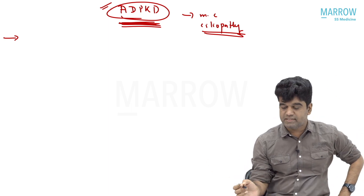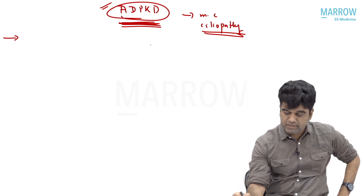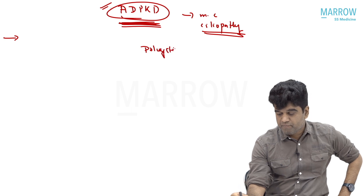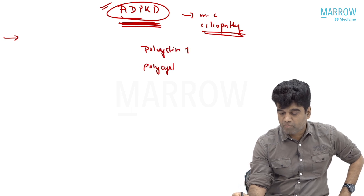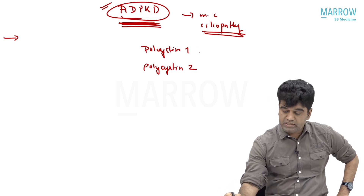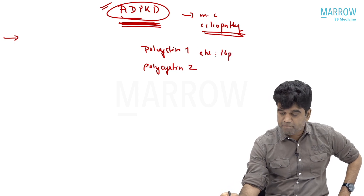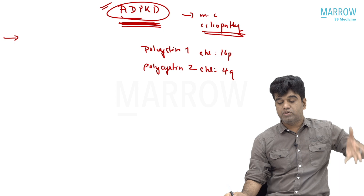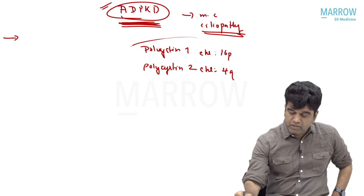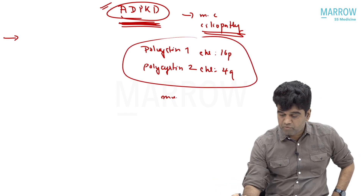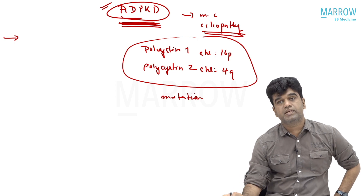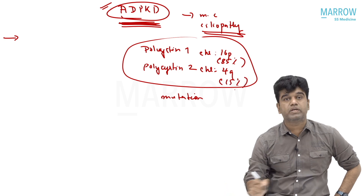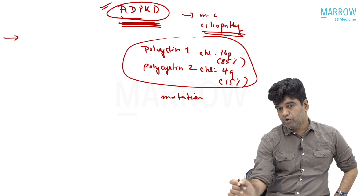This disease is first and foremost about two genes. We will talk about polycystin 1 and polycystin 2. Polycystin 1 is on chromosome 16p and polycystin 2 is on chromosome 4q. We are going to talk about a mutation in chromosome 16p or chromosome 4q — 85% of the time it is 16p and 15% of the time it is 4q.